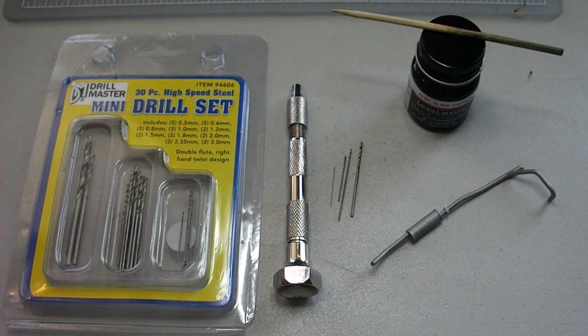Drilling out the tips on the exhaust system of a model car is a quick and easy way to add lots of detail. And it's a very simple procedure.